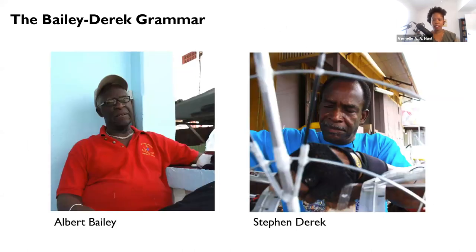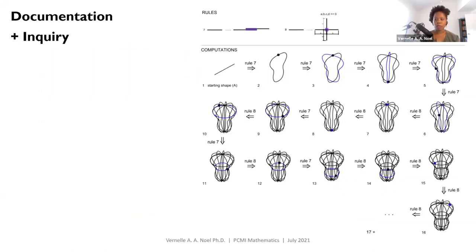This is Albert Bailey and Stephen Derrick, who I named the grammar after. The Bailey-Derrick Grammar is an example of how it can be used to externalize knowledge, so that these rules are less tied to practitioners who are passing away and retiring. It facilitates documentation and the recording of the design and making process, and sheds light on the computational dimensions of the practice, opening it up for further inquiry.